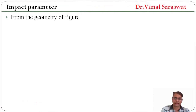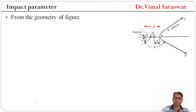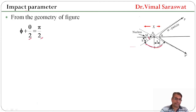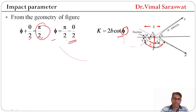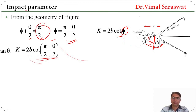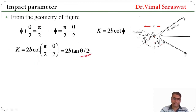From the geometry of the figure, φ + θ/2 = π/2, so φ = π/2 − θ/2. Substituting into k = 2b·cot φ: k = 2b·cot(π/2 − θ/2). Since cot(π/2 − θ/2) = tan(θ/2), we get k = 2b·tan(θ/2), or equivalently 2b/k = cot(θ/2).